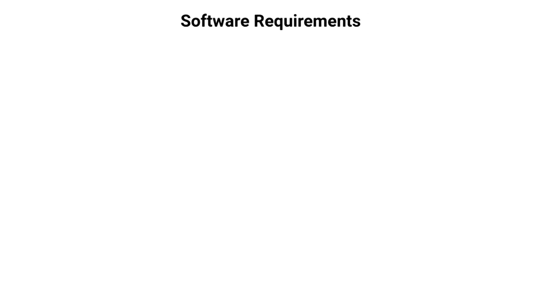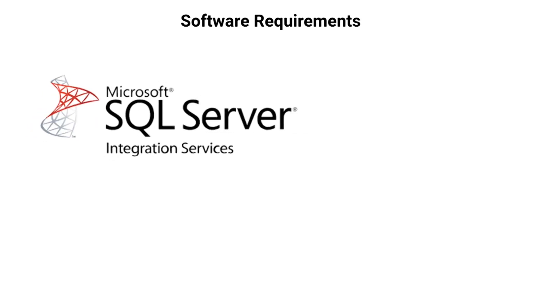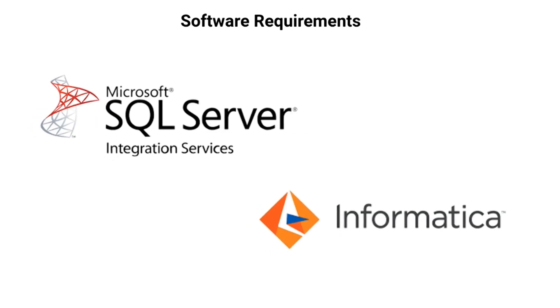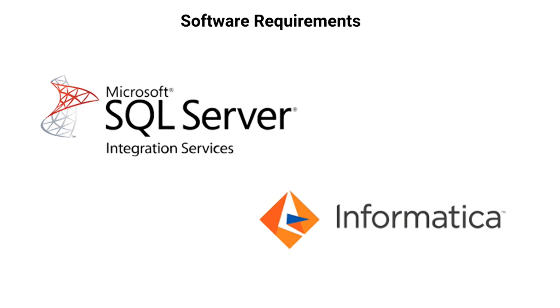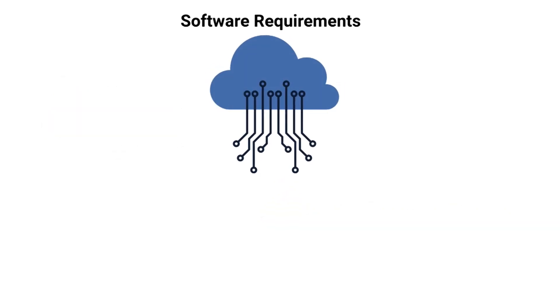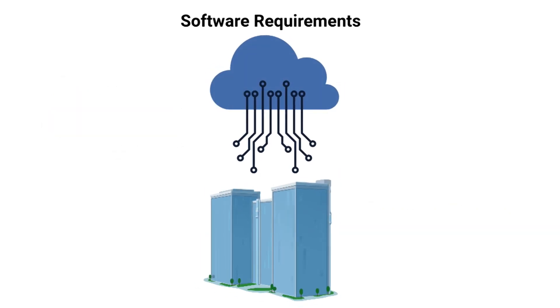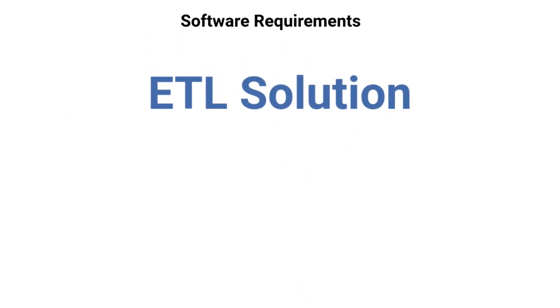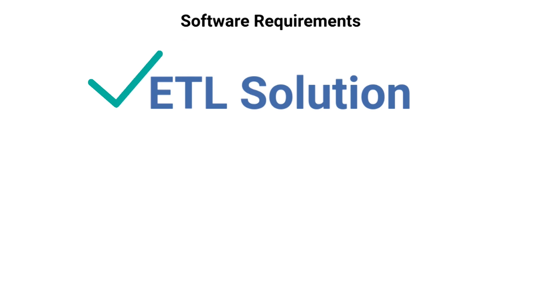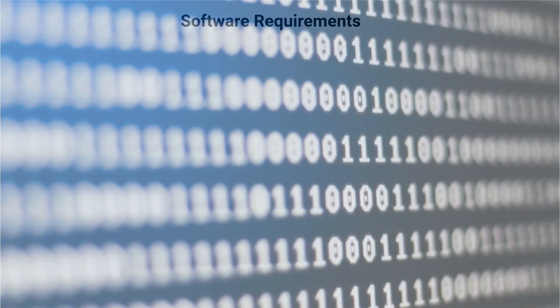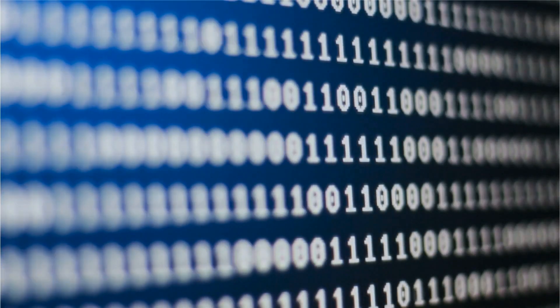Let's talk about the type of software you need to build a data warehouse. First, you'll need a good ETL solution. Some of the more common names are SQL Server Integration Services or Informatica. Your decision on whether you're going to build a data warehouse in the cloud or on-prem may impact this decision. But regardless, you are going to need an ETL solution — this is critical to help you manage the massive amount of data you're going to be loading on a day-to-day basis into the data warehouse.